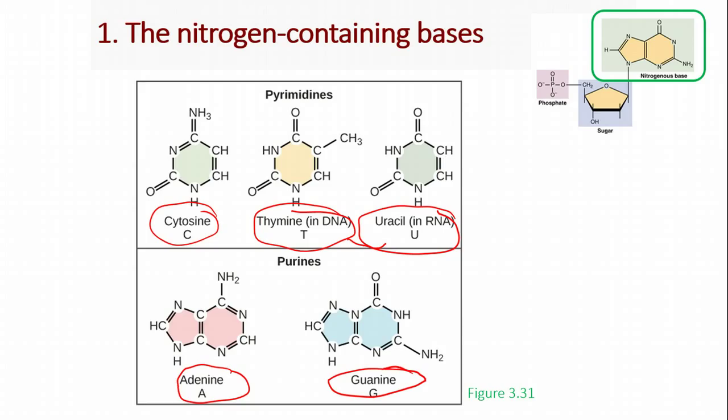These are split into two types of bases. The first is pyrimidines and the second is purines. The purines are adenine and guanine. The pyrimidines are cytosine, thymine, and uracil.